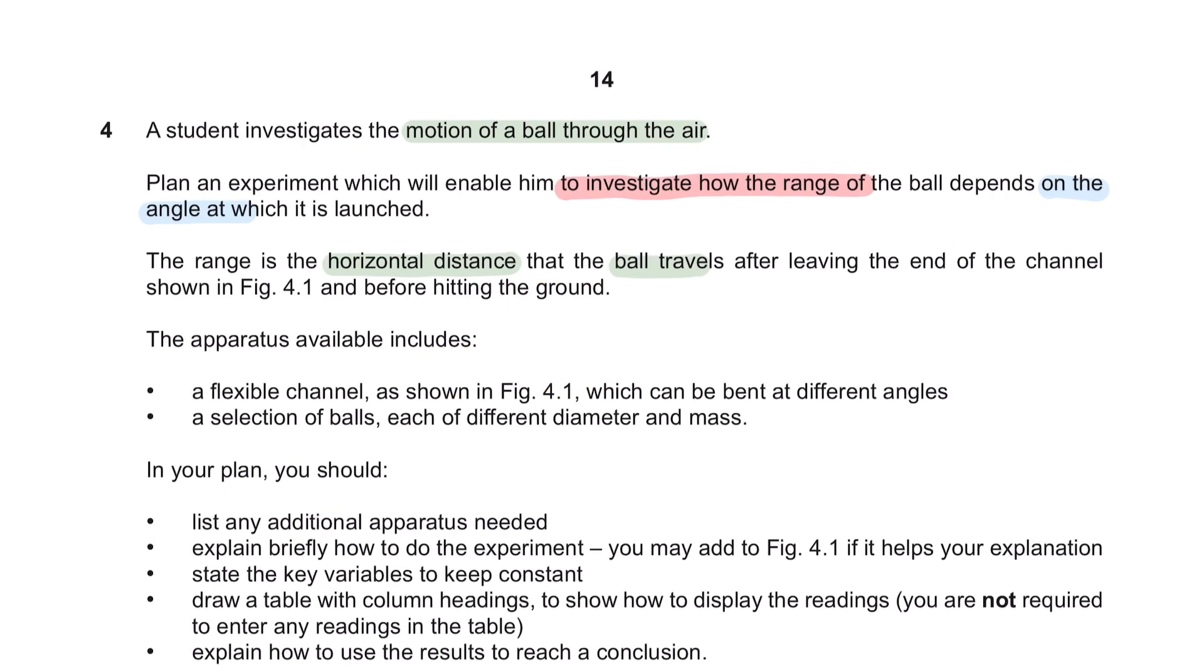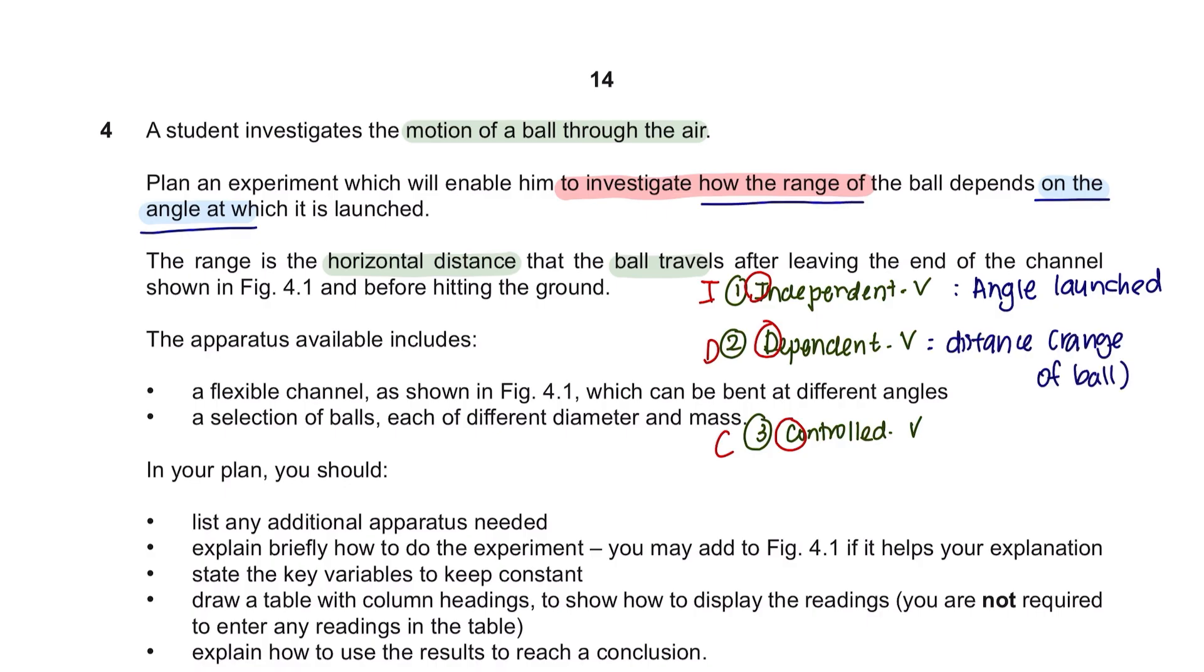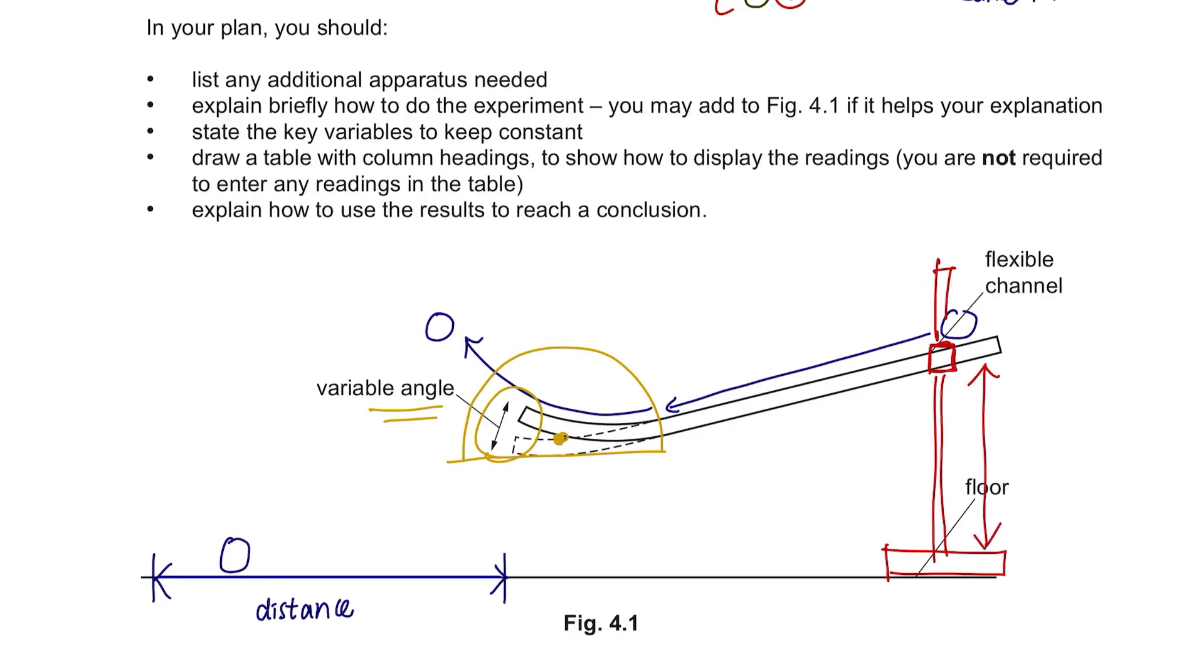Before planning the experiment, let's identify the key variables. I like to remember the mnemonics, I don't care, to remember what variables I need to look for. For the independent variable is what is being changed in this experiment and that would be the angle at which the ball is launched. As for the dependent variable, that would be the variable that you're looking to investigate or record and that would be the range of the ball. And lastly, to keep control so that the experiment is fair, use the same mass for the ball and the height of the upper end of the channel should be the same for every angle during the launch of the ball.